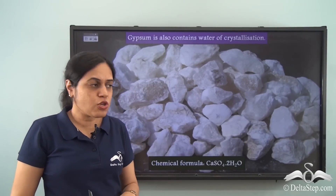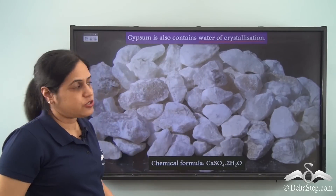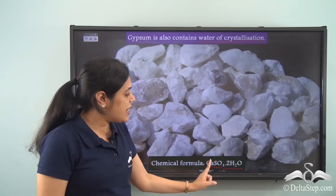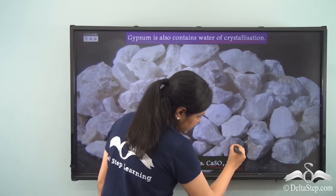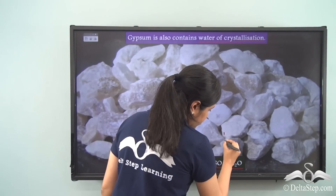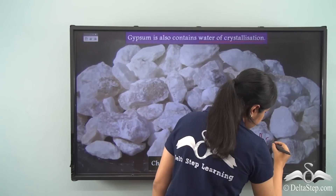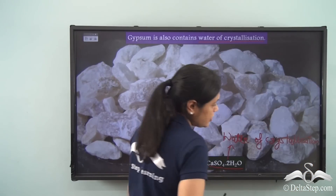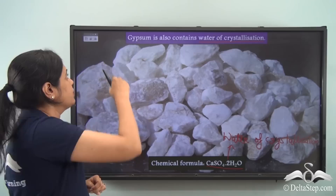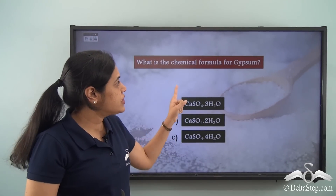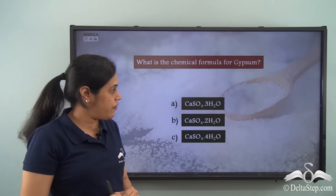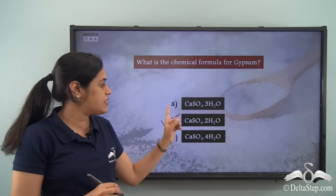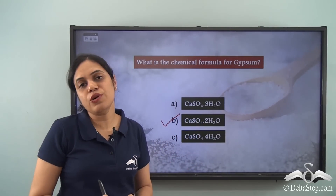Now gypsum is another salt that also contains water of crystallization. The formula for gypsum is CaSO4·2H2O. As we can see, it contains 2 molecules of water of crystallization. The chemical formula for gypsum is calcium sulphate with 2 molecules of water of crystallization: CaSO4·2H2O.